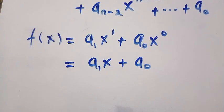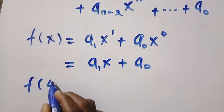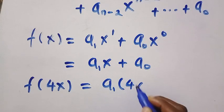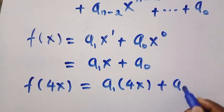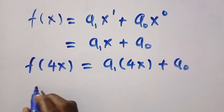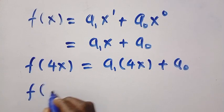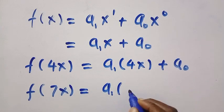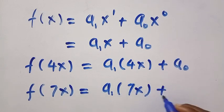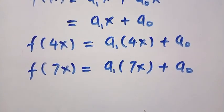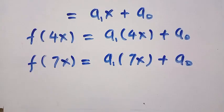Therefore, to get f of 4x, we have to substitute f of 4x equals a_1 into bracket of 4x plus a_0. And again, we need to get f of 7x as we have f of 7x equals a_1 into bracket of 7x plus a_0. And we have to add this together and equate it to x plus 1.